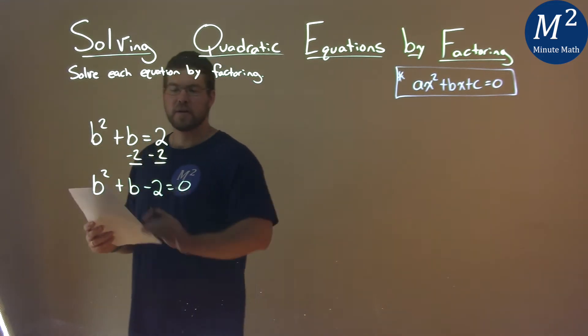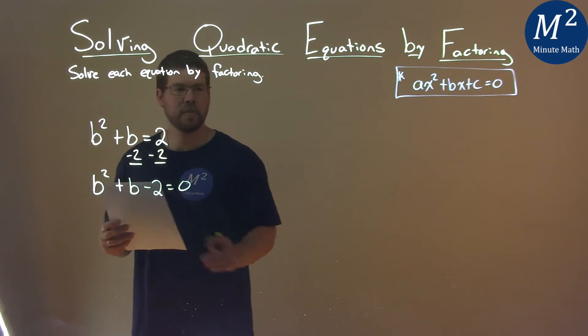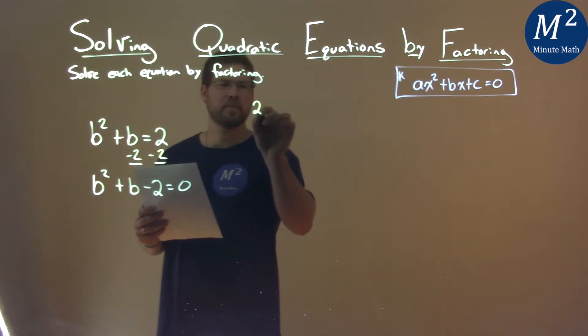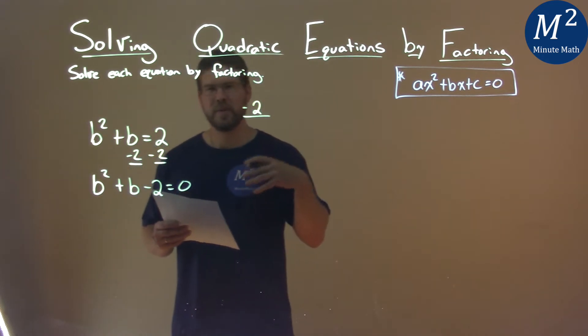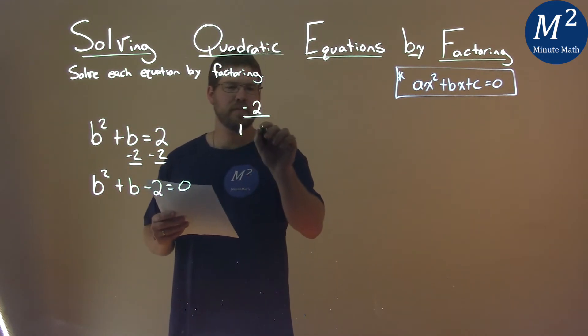So let's factor this quadratic. I look at my c value, which is negative 2. Now I ask myself, when you deal with positive 2, what two numbers multiply to be positive 2? That's just 1 and 2.